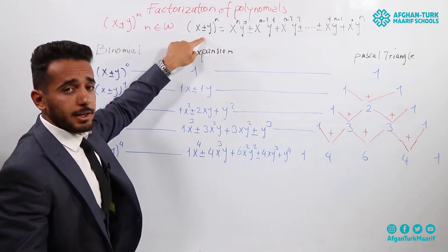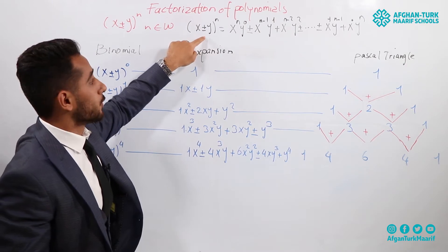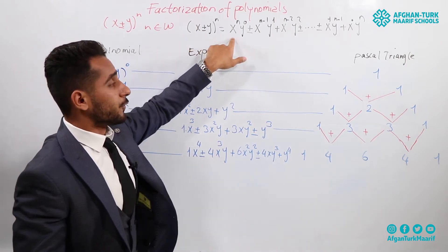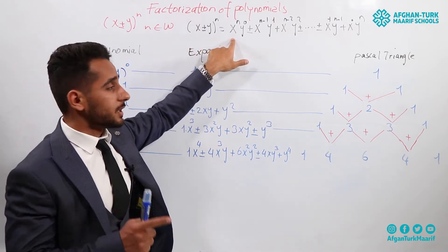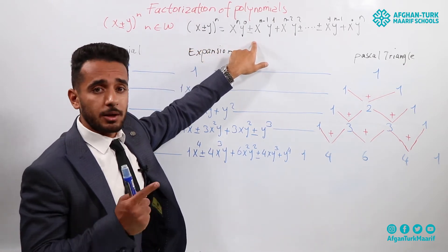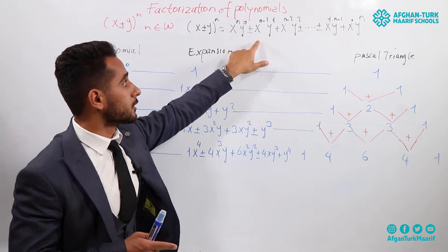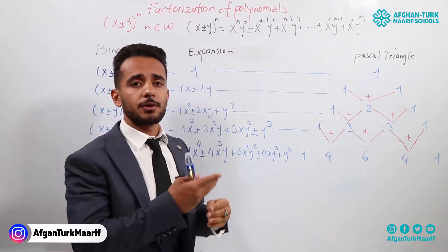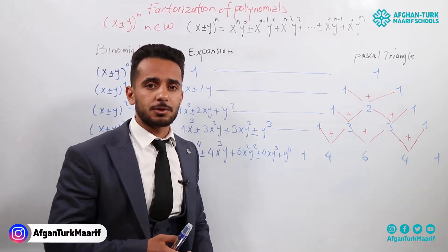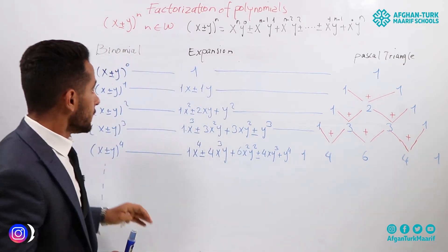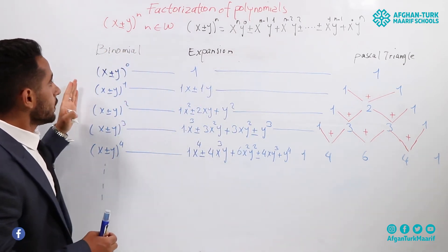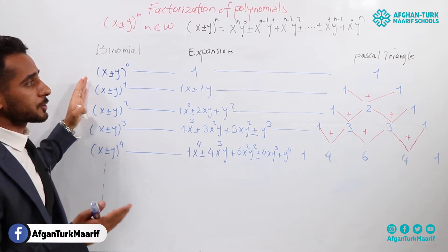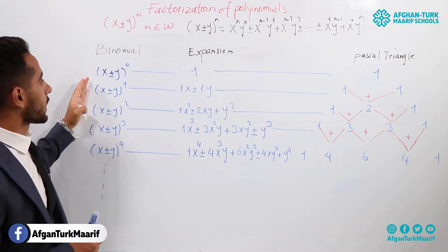If it is minus, the first term will be positive, the second will be negative, the third one will be positive — it changes alternatively. Pay attention to the expansion and how to expand using the Pascal triangle.